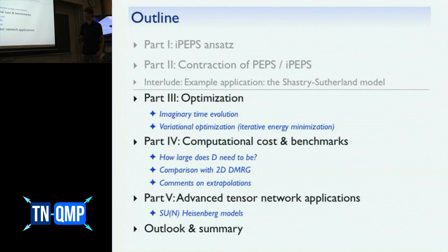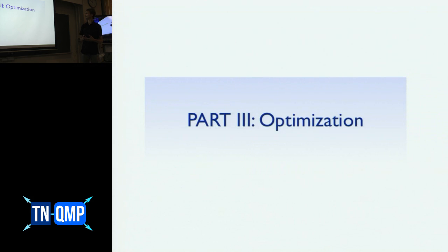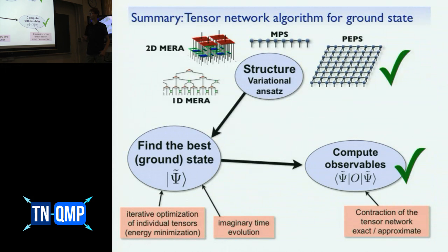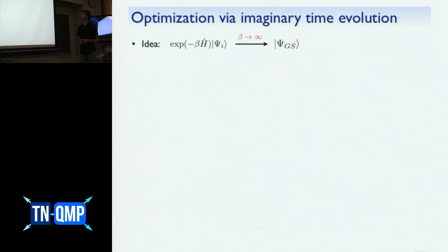Let's continue with the optimization. Yesterday we talked about these three steps for ground state calculations: you start from a tensor network ansatz, which is a variational ansatz, and the next step is to find the best variational parameters for the best approximation to some ground state of a given Hamiltonian. In the past this has been done for iPEPS using imaginary time evolution. The idea is to apply the exponential of minus beta H onto some initial wave function, and for beta going to infinity this projects us onto the ground state.